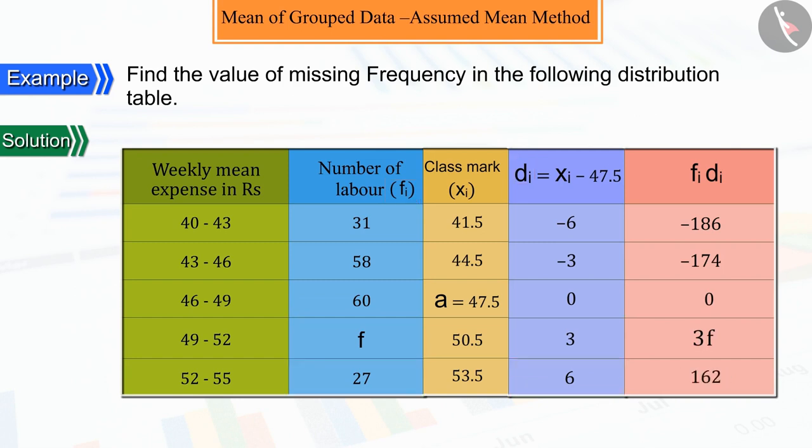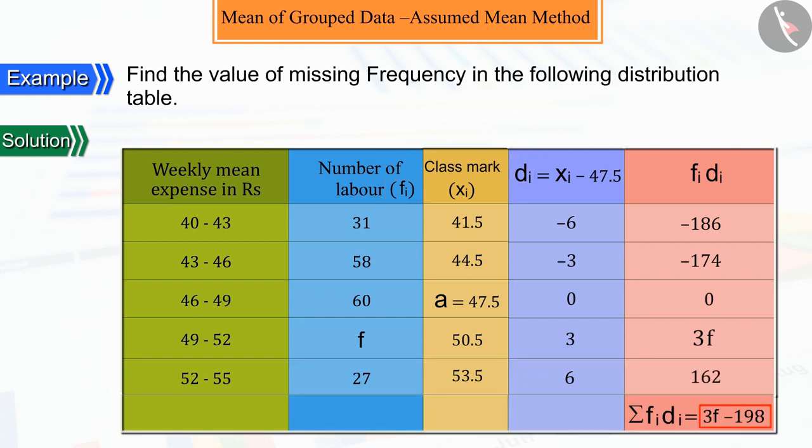We get their sum equal to 3F minus 198, while the sum of corresponding frequencies is obtained as 176 plus F.